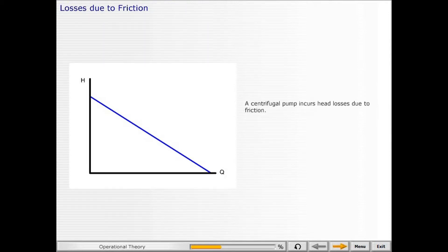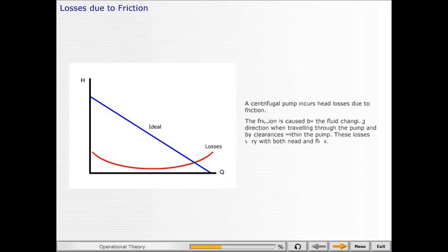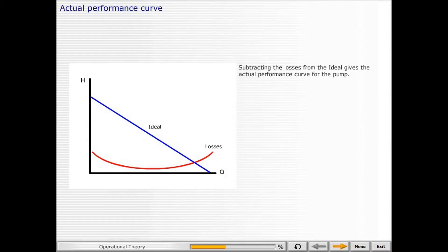A centrifugal pump incurs head losses due to friction. The friction is caused by the fluid changing direction when traveling through the pump and by clearances within the pump. These losses vary with both head and flow. Subtracting the losses from the ideal gives the actual performance curve for the pump.